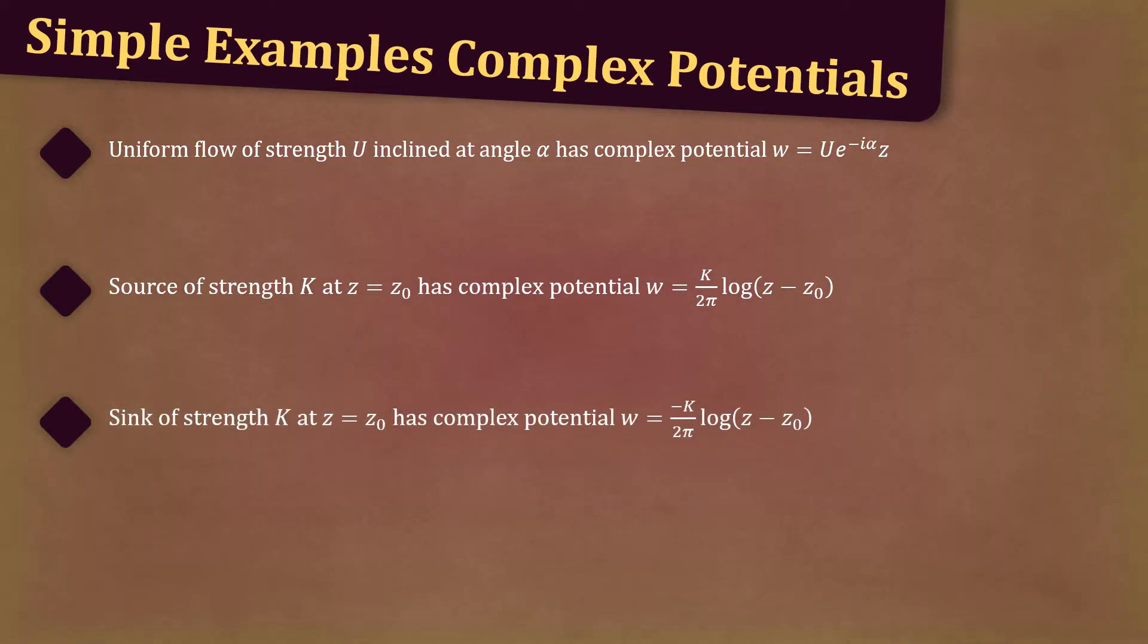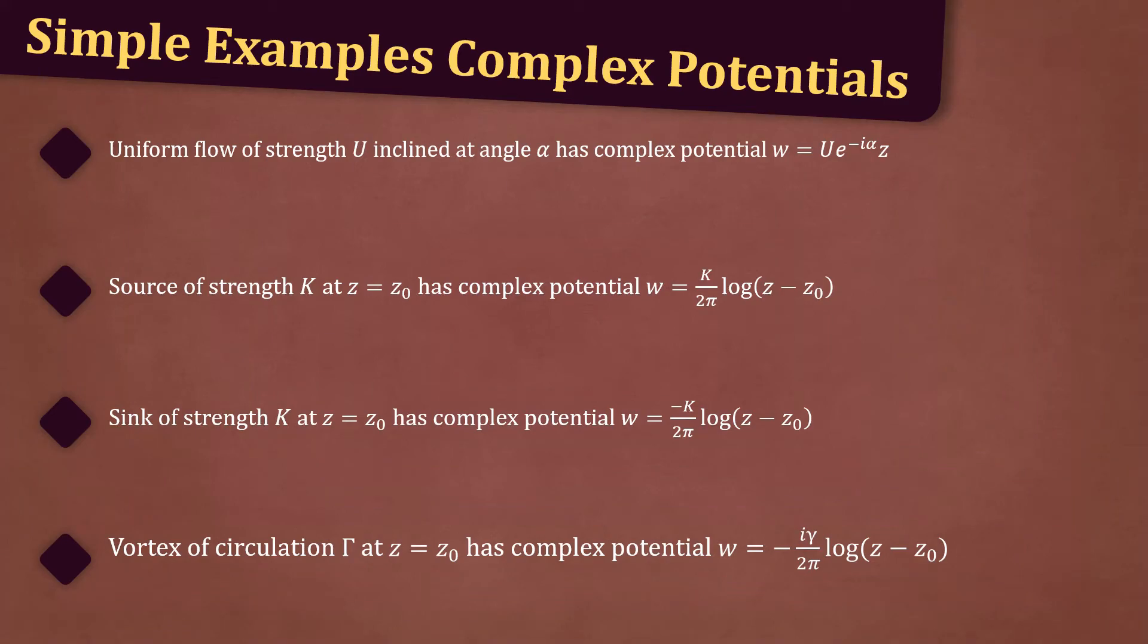A sink of strength K at z = z₀ has complex potential w = -(K/2π)log(z - z₀). A vortex of circulation Γ at z = z₀ has complex potential w = -(iΓ/2π)log(z - z₀).